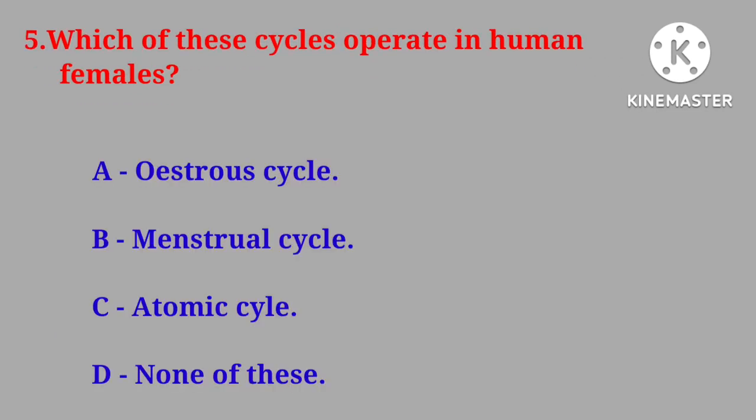Question No. 5: Which of these cycles operate in human females? Oestrous cycle, menstrual cycle, atomic cycle, or none of these. Correct answer is oestrous cycle.